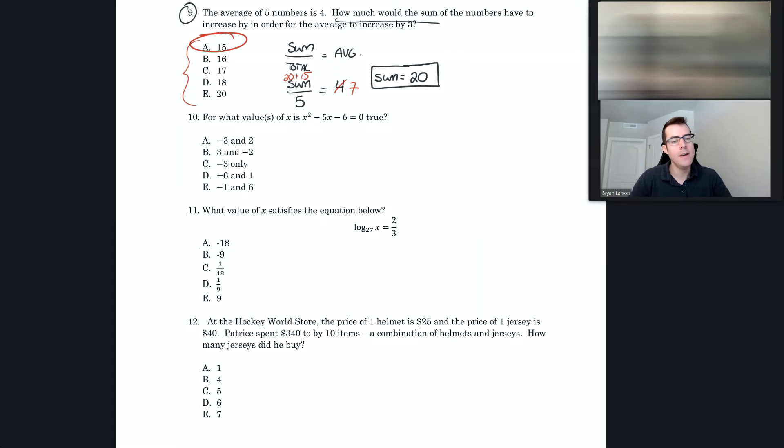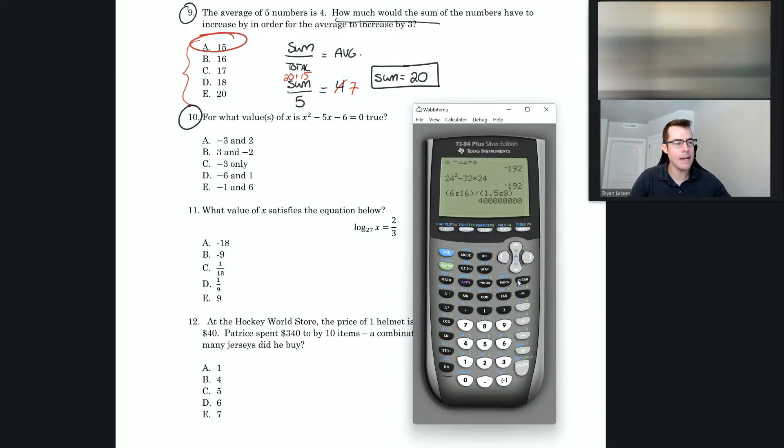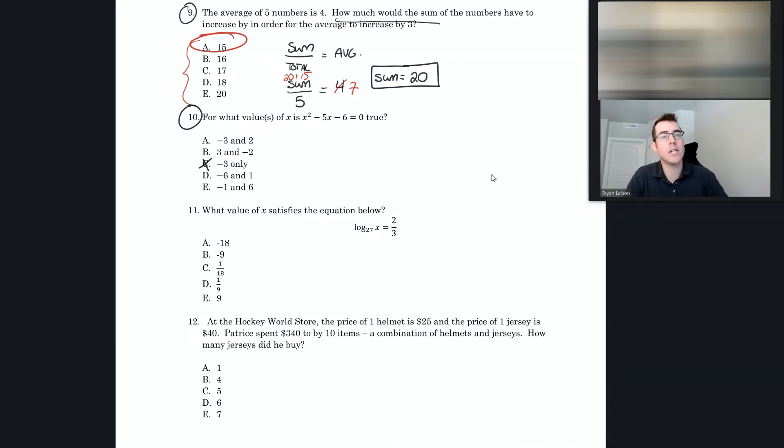Alright, let's check the rest. What'd you get for number 10? C? Be very careful with number 10. When you're typing negative numbers into your calculator, you want to make sure that you keep them in parentheses. If I was putting in negative three for x, I want to make sure I'm putting parentheses around negative three squared, minus five times parentheses negative three, minus six. Because if I do that, see how that gives me 18? Which is not equal to zero. So if you're putting in negatives, be very careful to keep them in their own parentheses.